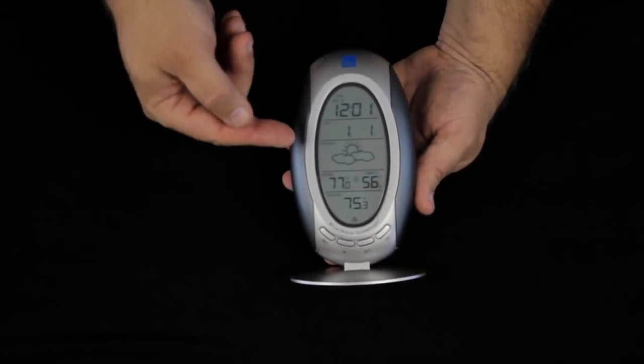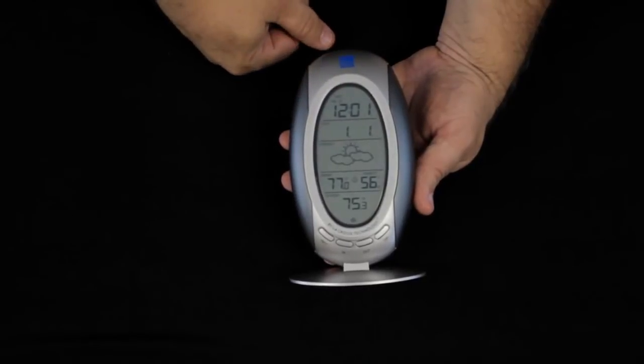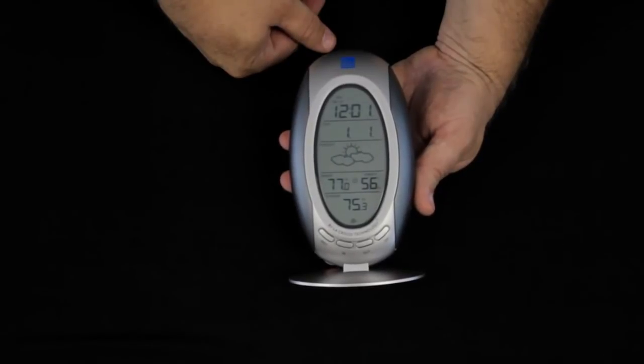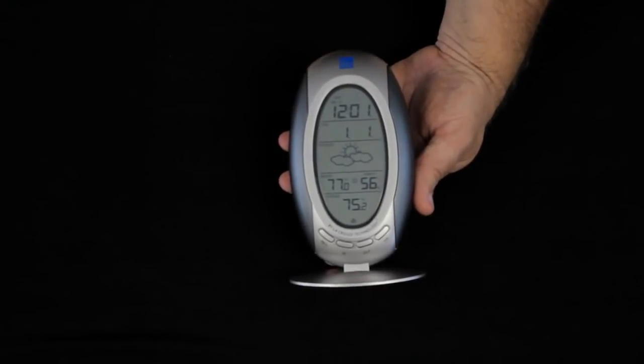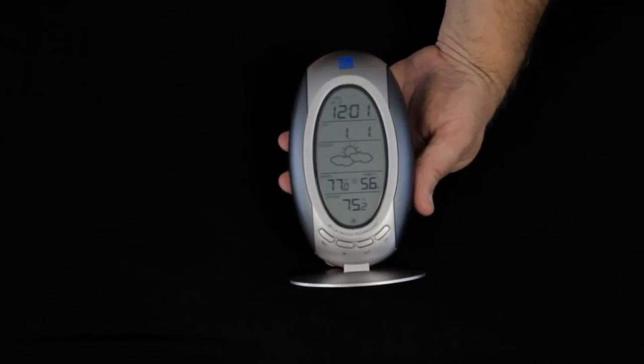You'll also find arrows on the right and left, up and down. After the unit's been operating for a bit, those will start to operate. Up means that the pressure is increasing. Increasing pressure generally means to look for good weather or better weather. The down arrow shows that pressure is decreasing. Generally when the pressure decreases, we expect weather conditions to deteriorate.